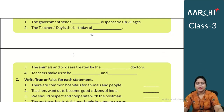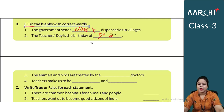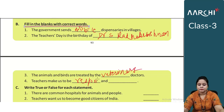Section B: Fill in the blanks with the correct words. First, the government sends mobile dispensaries to villages. Second, Teacher's Day is the birthday of Dr. S. Radhakrishnan. Third, animals and birds are treated by the veterinary doctor. Fourth, teachers make us responsible and educated citizens.